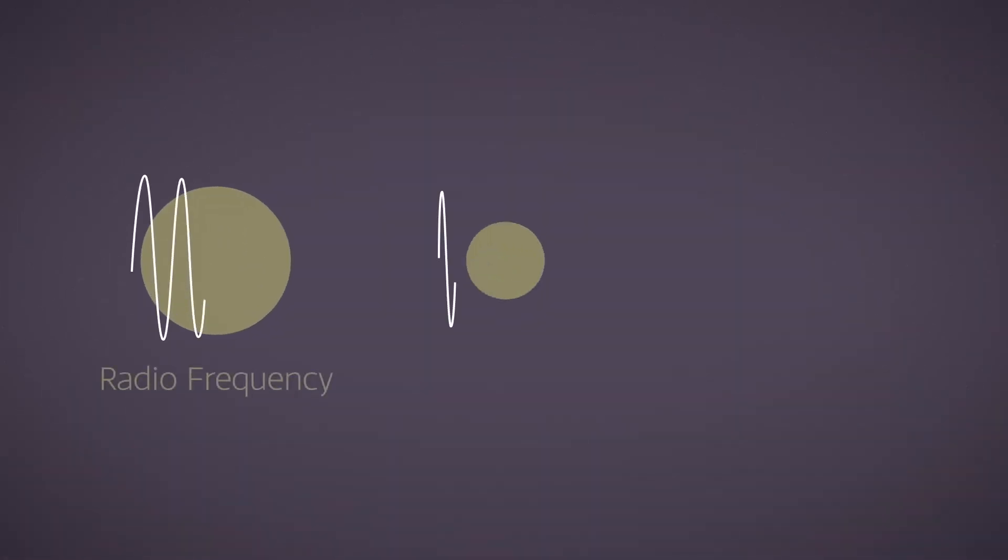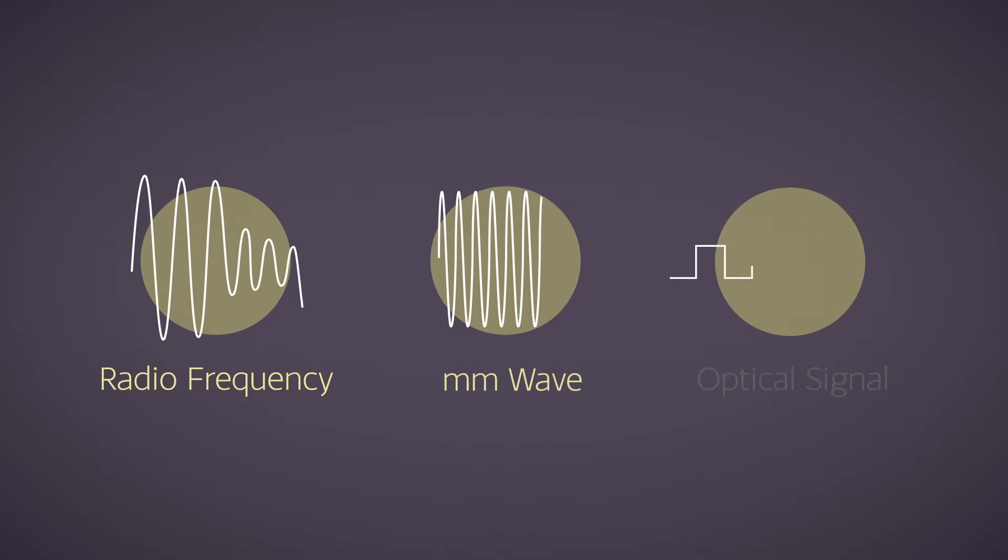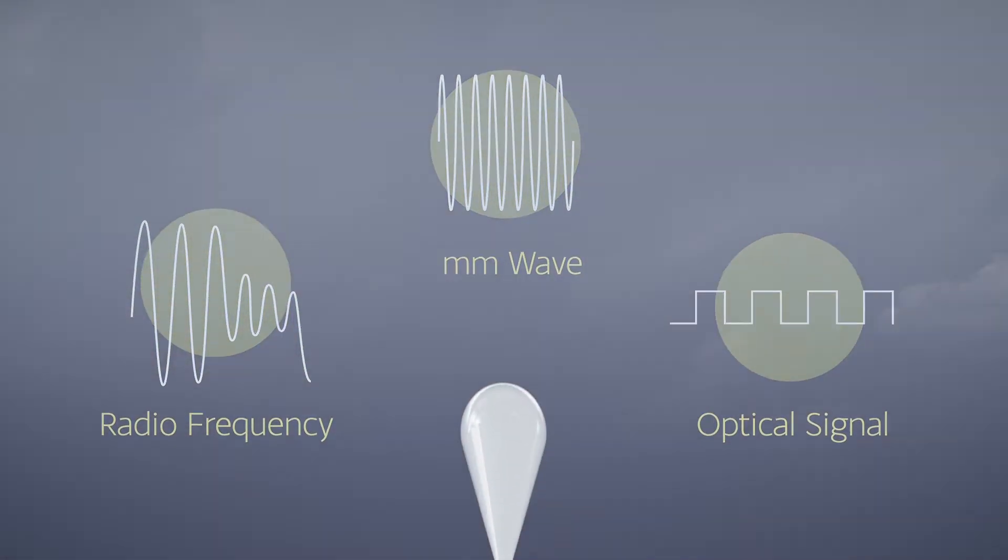A radio frequency, millimeter wave, or optical signal is used by the haps as a communications channel to process the quantum key, share the GPS coordinates, and share conventional communication information.